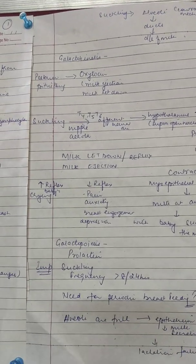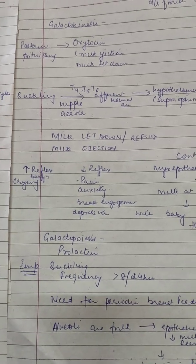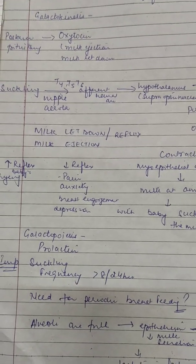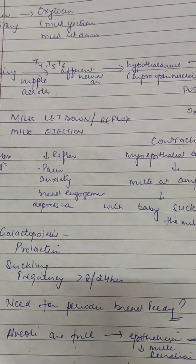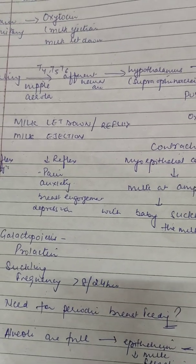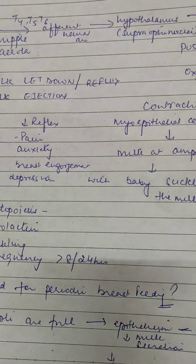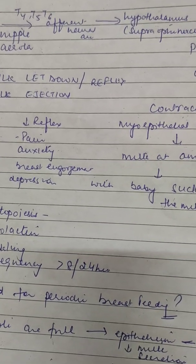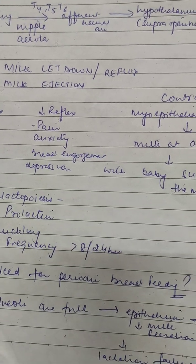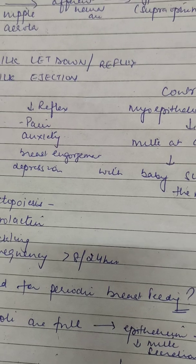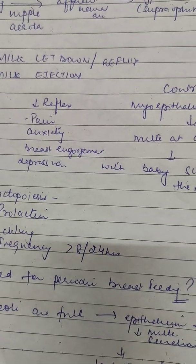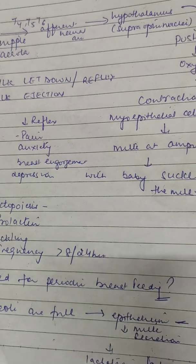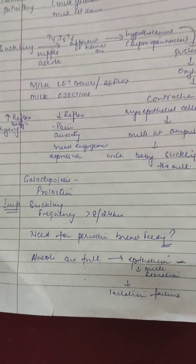There are also reflexes which stimulate ejection or let-down of milk — for example, when a mother hears a baby crying, the arc is spontaneously stimulated and there is release of milk. However, factors like pain, anxiety and depression after delivery can reduce milk ejection. The mother may be anxious about feeding, in pain from stitches, or the breasts may be so engorged that suckling causes pain — these act as a hindrance and reduce milk ejection.